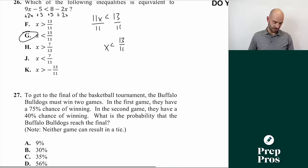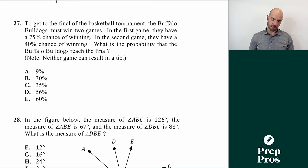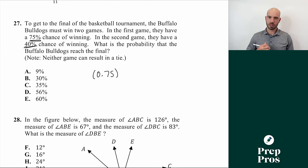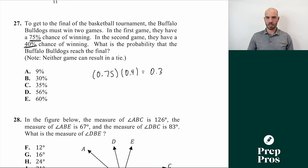Number twenty-seven: the Buffalo Bulldogs have a 75% chance of winning game one and a 40% chance of winning game two. To find the probability they win both, multiply the probabilities: 0.75 times 0.4 equals 0.3, which is 30%. When finding the probability of multiple independent events all occurring, multiply the individual probabilities. The answer is B.